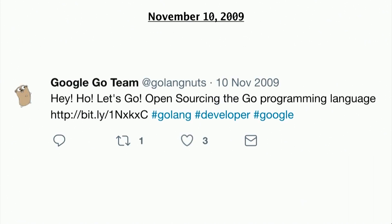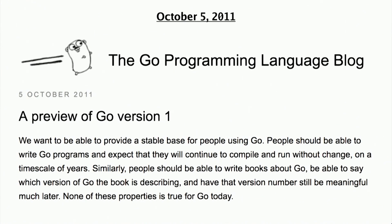For the next two years, with the help of the new Go open source community, we experimented with changes large and small, refining Go and leading to the plan for Go 1, proposed on October 5, 2011.